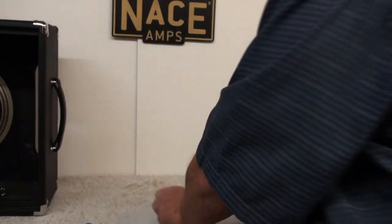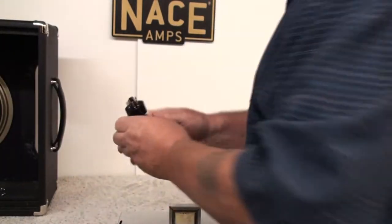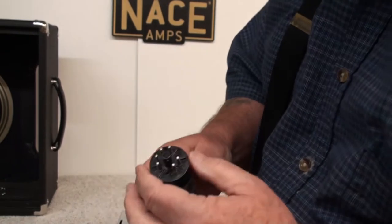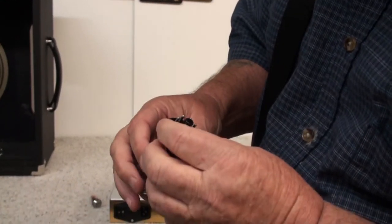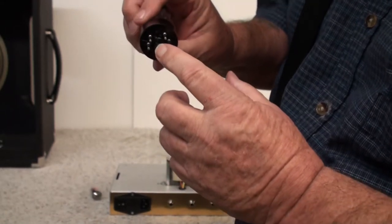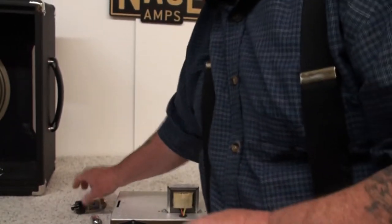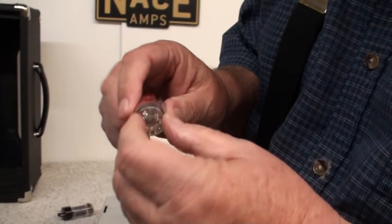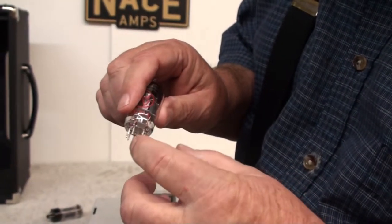And I'll show you the tubes. Here's the power tube. And you should be able to see the key pin right here. And here's the preamp tube. And you should be able to see the missing pin right here.